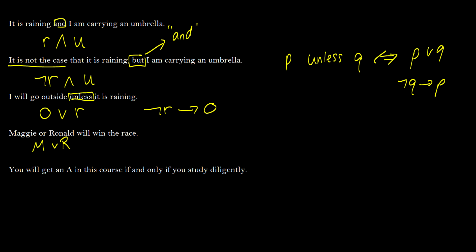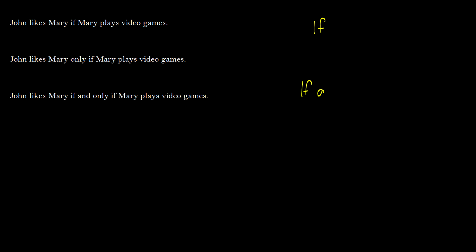Our final sentence on this slide: 'You will get an A in this course if and only if you study diligently.' Let A represent 'you will get an A in this course' and S represent 'you study diligently.' The symbol for IF AND ONLY IF is the biconditional (↔), so we write A ↔ S.